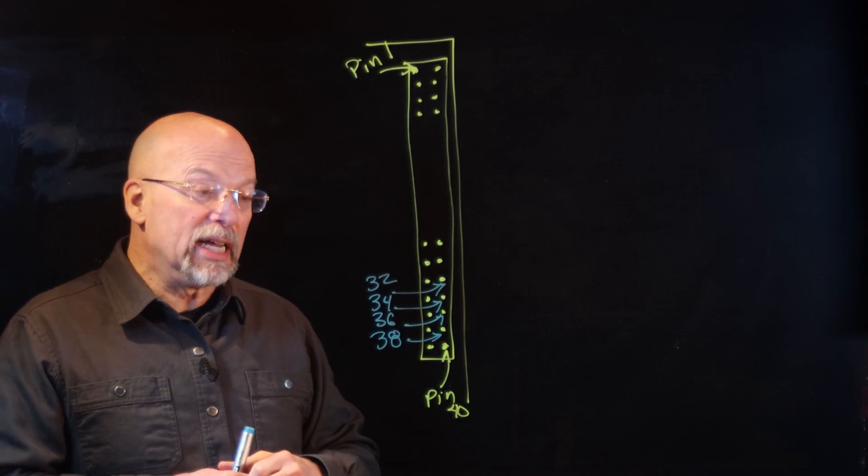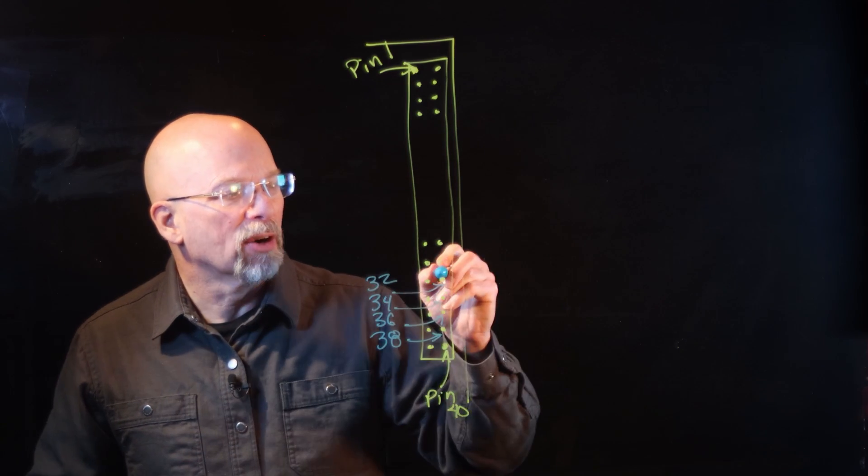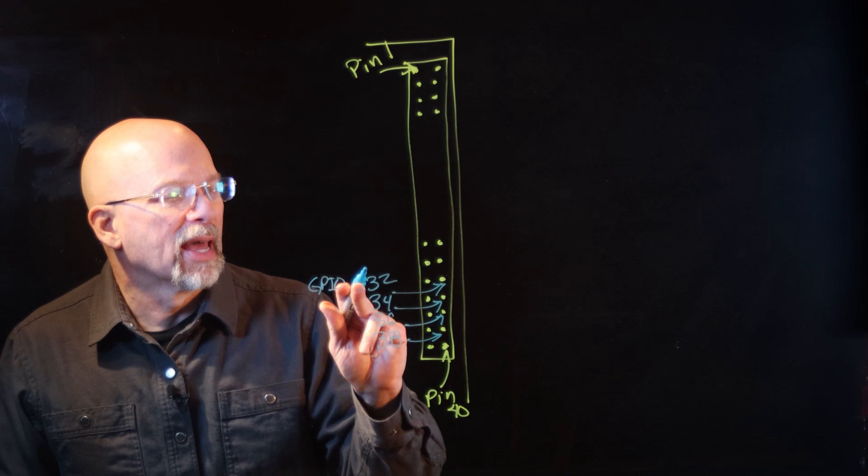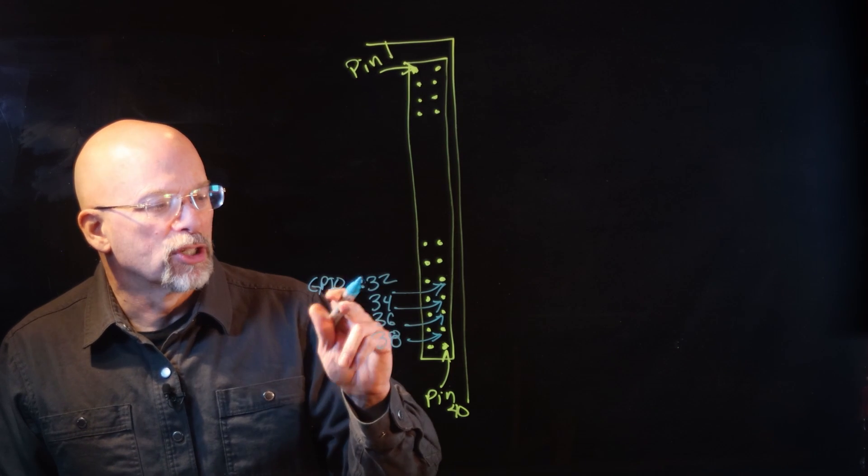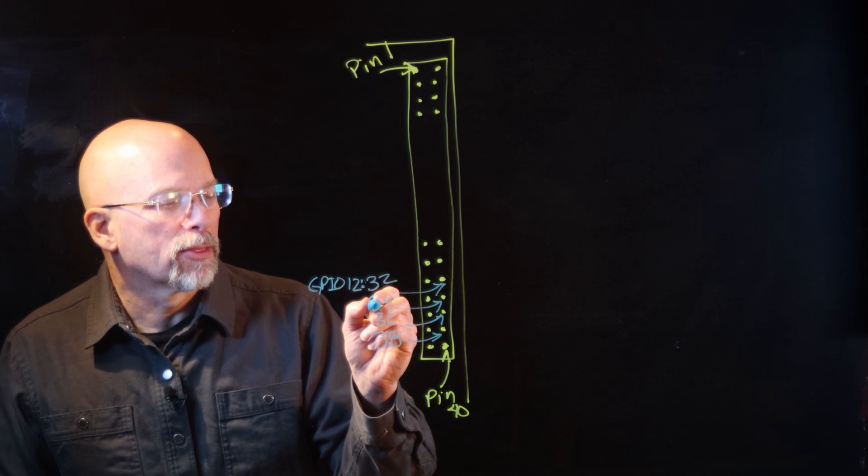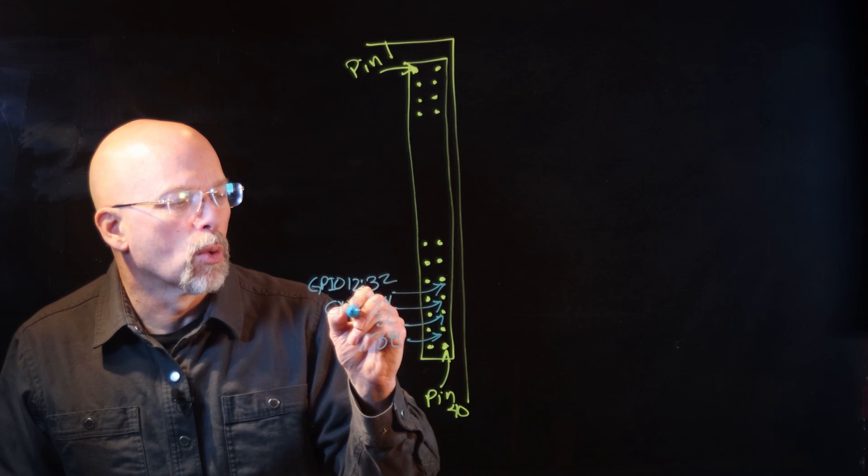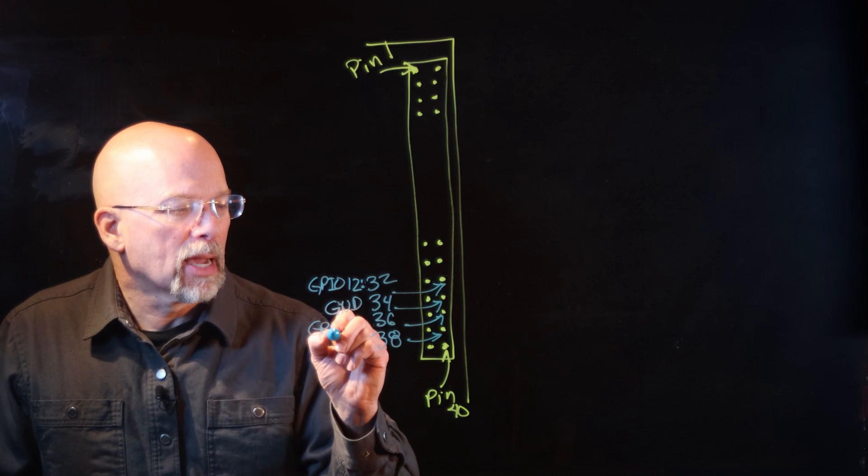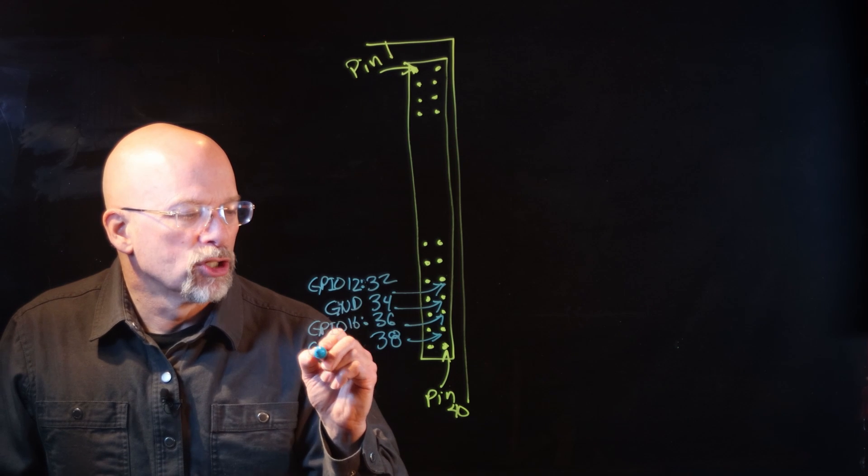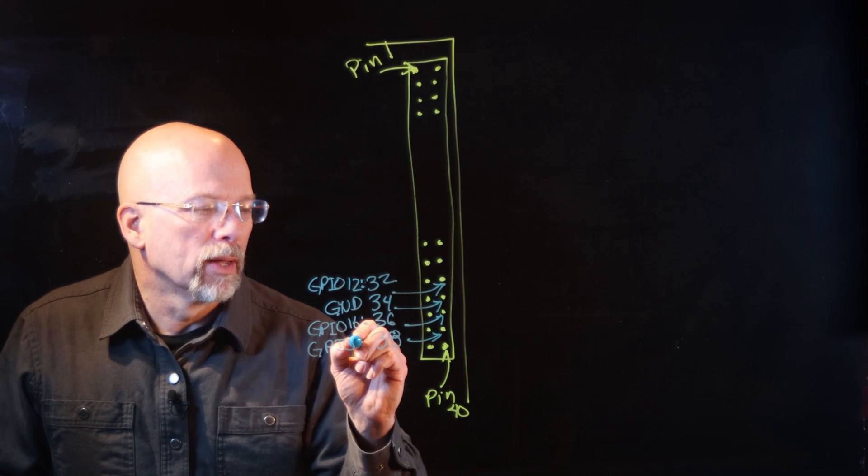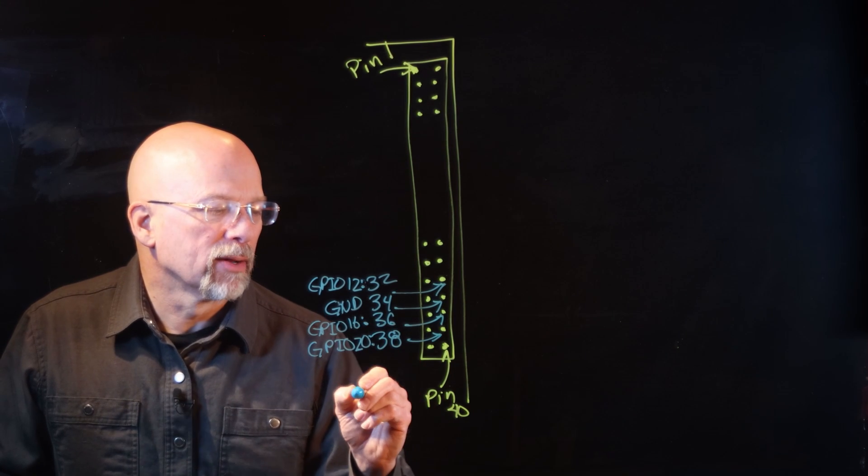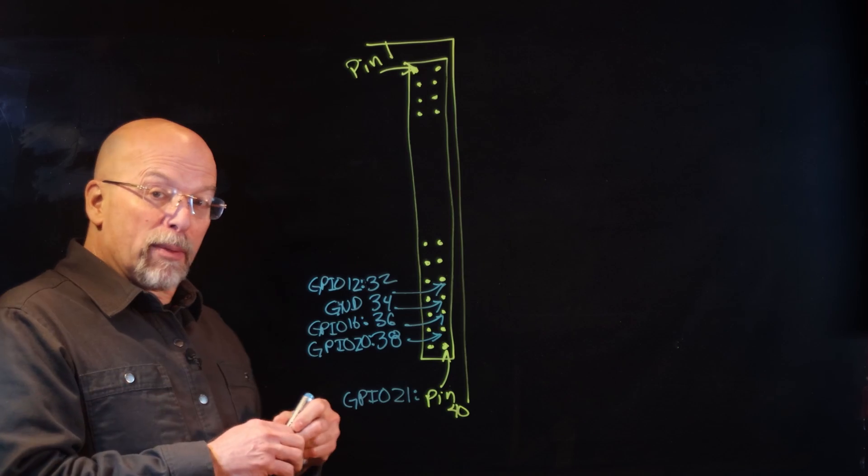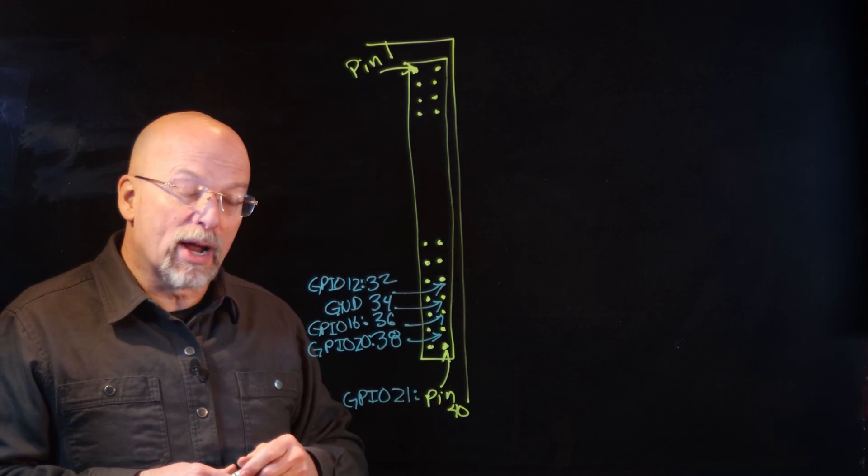Now if you go back to that GPIO read-all, what you'll see is that this pin right here is actually connected to what we call GPIO 12. And then pin 34, this is ground or 0 volts. This is what's being connected to the other side of our switch. And then we've got GPIO 16, and then GPIO 20. And then pin 40 down here, that one is connected to GPIO 21. Now these numbers are going to be important whenever we go to the software, when we start writing the script.